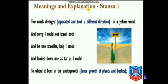Now, stanza 1. I am going to explain stanza by stanza. 'Two roads diverged in a yellow wood, and sorry I could not travel both and be one traveller; long I stood and looked down as far as I could to where it bent in the undergrowth.' Once when Robert Frost was traveling alone, he reaches a point where two roads diverged.